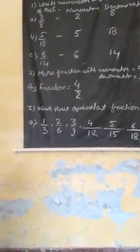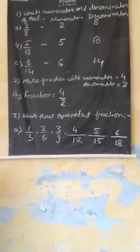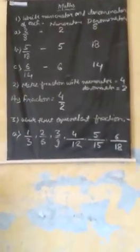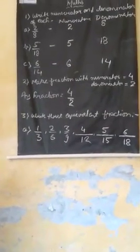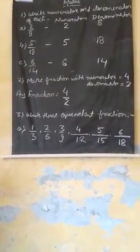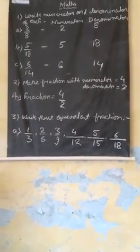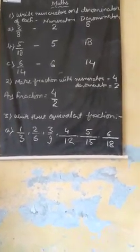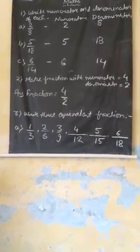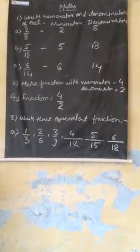When we obtain the simplest part, 2 upon 6 is equal to 1 upon 3. So it is equal to the same number. Equivalent fractions are equal to the same number.